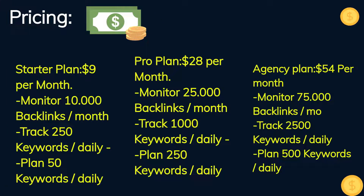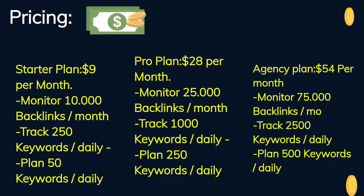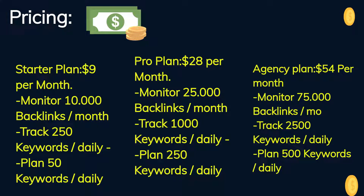Pricing plans for Zootrix are as follows: First, Starter plan at $9 per month — includes monitoring 10 backlinks per month, tracking 250 keywords daily, and planning 50 keywords daily. Second, Pro plan at $28 per month — includes monitoring 25 backlinks per month, tracking 2,500 keywords daily, and planning 500 keywords daily.